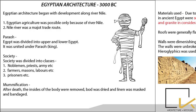Pharaoh is the notion of a king — Egyptian kings were known as Pharaohs. Society was divided into three classes. The first class included noblemen, priests, and army people. The second class included farmers, masons, and laborers. The third class were prisoners, thieves, etc.